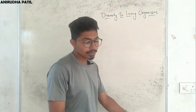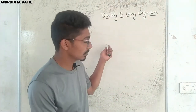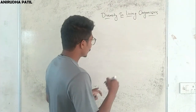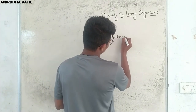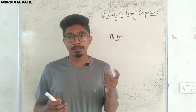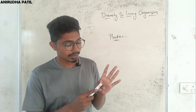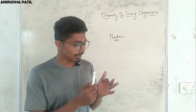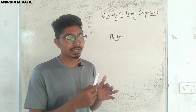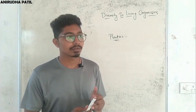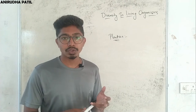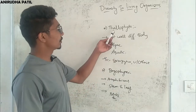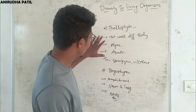Now we will go into detail about Kingdom Plantae. The plant kingdom is differentiated depending on three main features: first, whether they have well-differentiated body parts; second, whether they have specialized tissues; and third, whether they have seeds. They can be angiosperms, gymnosperms, pteridophyta, bryophyta, or thallophytes.